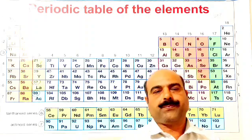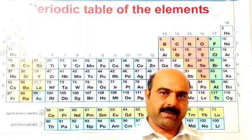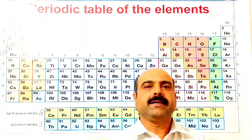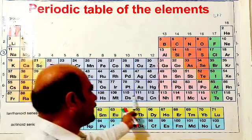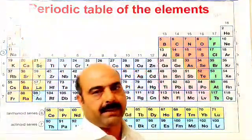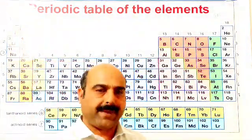What are periods in periodic table? The horizontal rows of elements from left to right in periodic table are called periods.